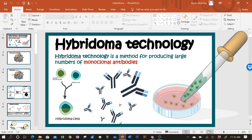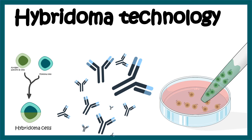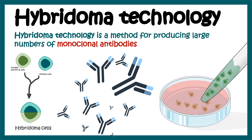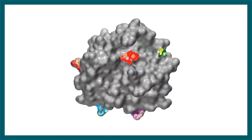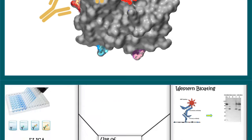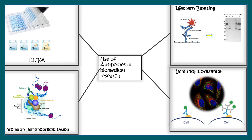In this video we'll talk about hybridoma technology, which is a technology for generating monoclonal antibodies. Monoclonal antibodies are antibodies which can recognize a single epitope on an antigen. Epitopes are antigenic determinants. If an antibody recognizes multiple epitopes, they are termed polyclonal antibodies. Now let us understand the difference between polyclonal and monoclonal antibodies and review their usage in biomedical research.